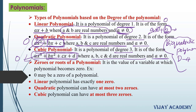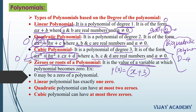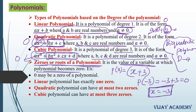Moving on to zeros or roots of a polynomial: the value of the variable which makes the polynomial 0 is called the zero or root of the polynomial. For example, for the polynomial x plus 3, the value x equals minus 3 makes it 0, so x equals minus 3 is the zero of this polynomial.